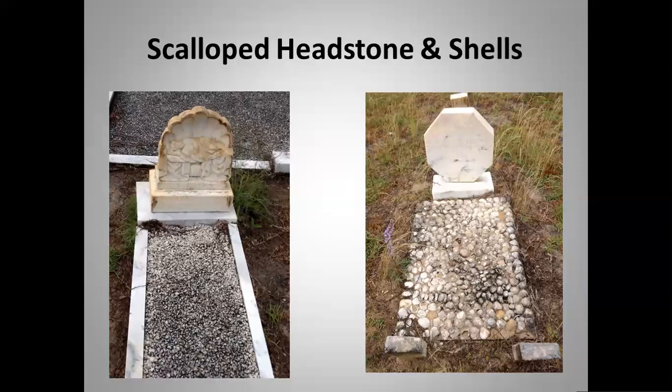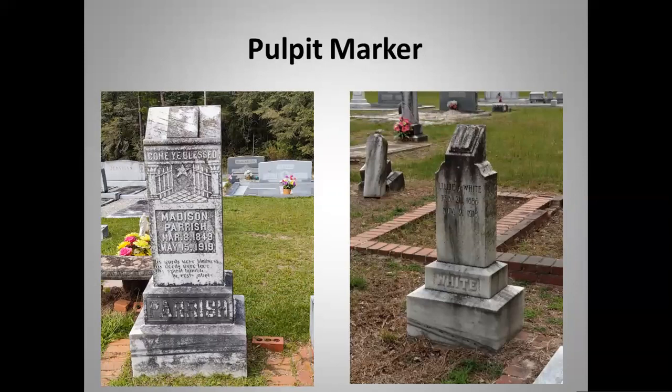On the right, the original grave was simply seashells placed in cement and then a headstone was added later. If you go through several cemeteries in the south, you'll see variations of the pulpit marker — these were kind of mass produced, some of the first you could purchase and then have individualized with various inscriptions or symbols. You can tell why it's called a pulpit marker by its shape.